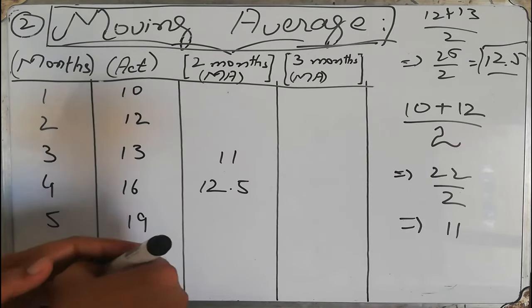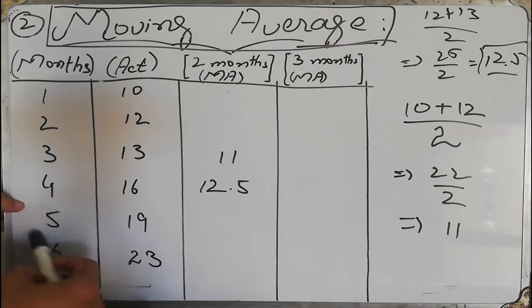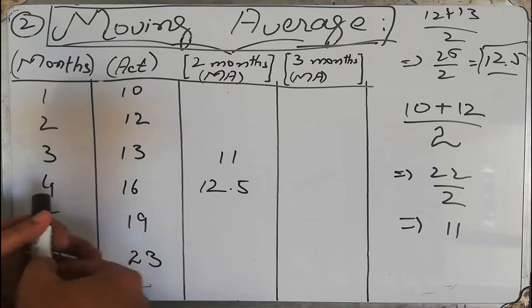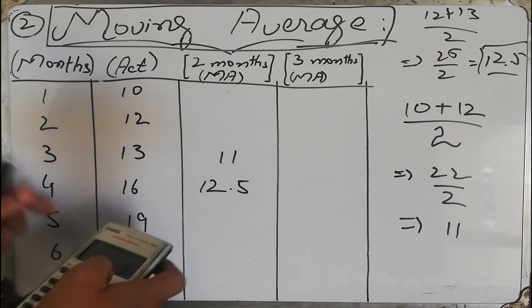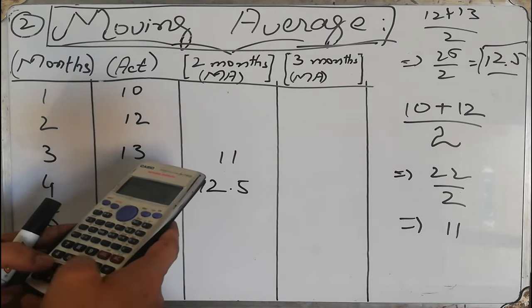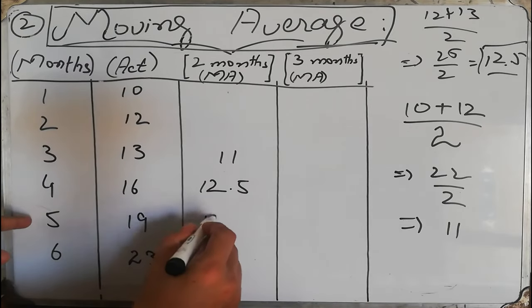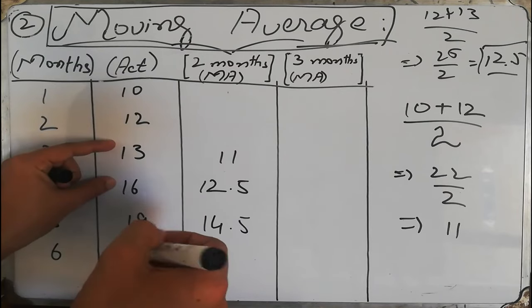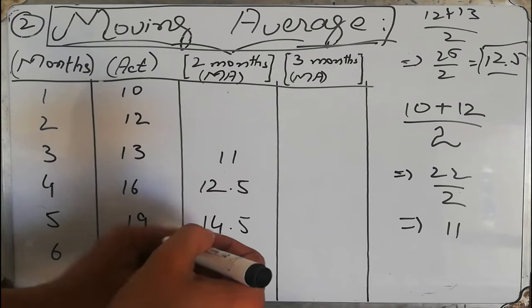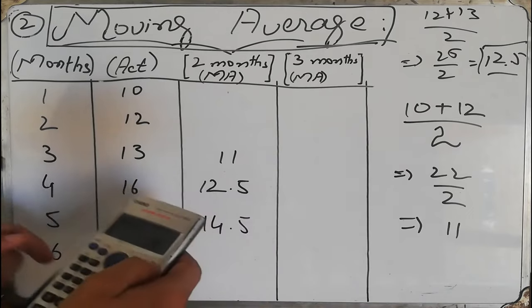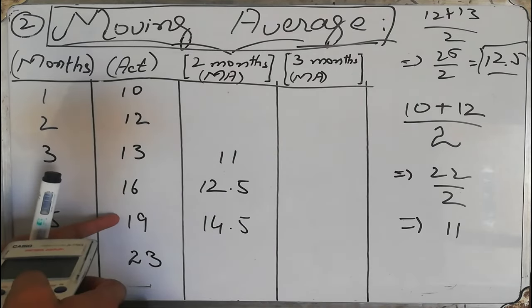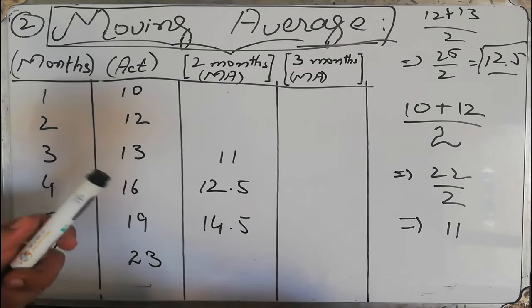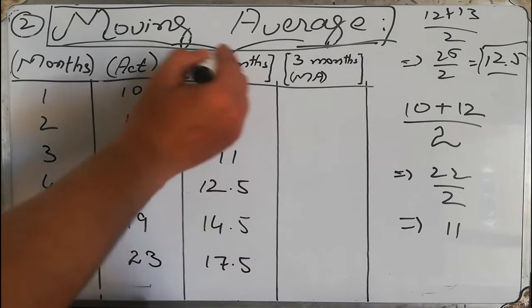For the fifth month using two-month moving average: (13 + 16) / 2 = 14.5. For the sixth month: (16 + 19) / 2 = 17.5. We call it 'two-month moving average' because we always take the two most recent actual data points to forecast the next month.